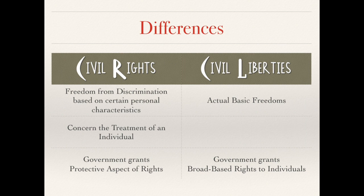The law differentiates between civil rights — the basic right of freedom from discrimination based on certain personal characteristics such as gender, race, or disability — and civil liberties, which are just basic freedoms. Civil liberties concern the actual basic freedoms, while civil rights concern the treatment of an individual regarding certain rights. Unlike civil liberties, where the government grants broad-based rights to individuals, civil rights also contain a protective aspect based on certain characteristics.